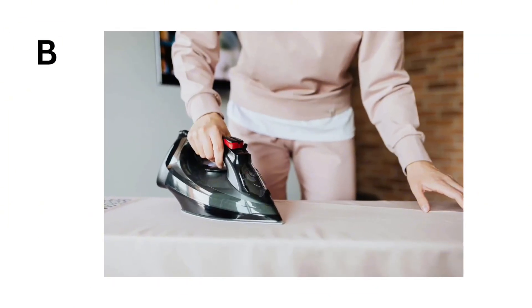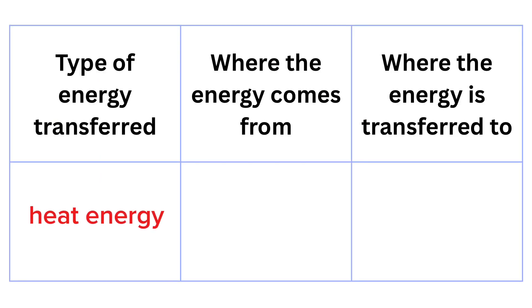Next, we have someone ironing. The iron needs to be hot to work, right? The iron takes electrical energy from the wall outlet. This energy is then transferred into heat energy in the iron's plate. The iron then transfers this heat energy to the clothes, smoothing out the wrinkles. So the iron is the source and the clothes are where the energy is transferred.